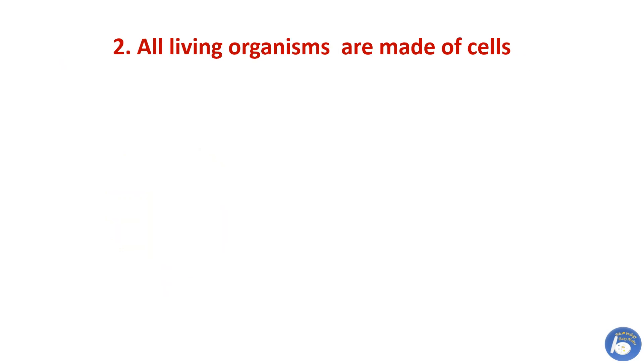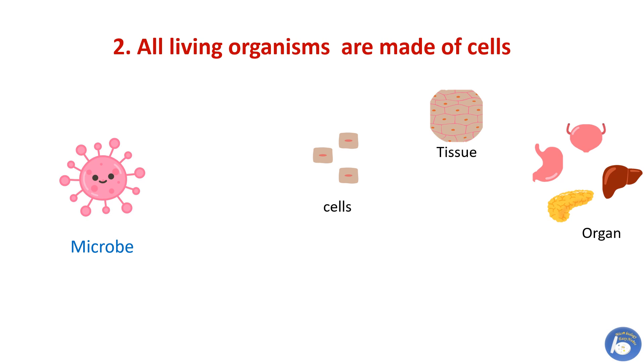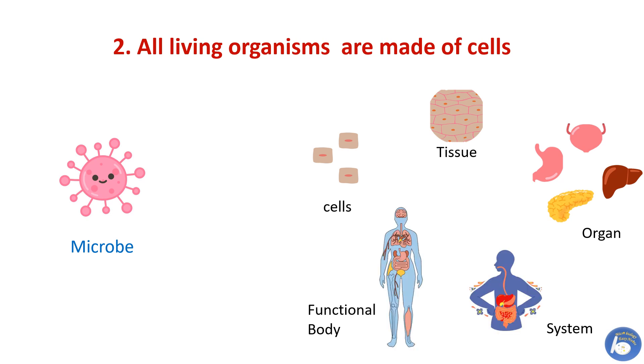All living organisms are made of cells. Whether it is a microbe, plant, animal, or human, all are made of one or more cells. In microbes, a single cell or more is enough for survival, but in higher animals, many cells come together to form tissues. Tissues form organs, organs create systems, and systems make a fully functional body.